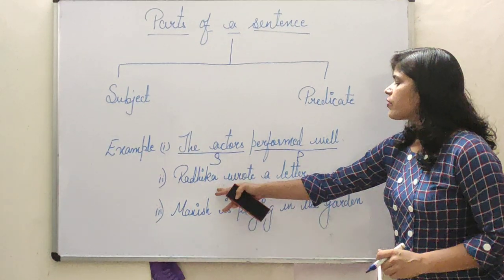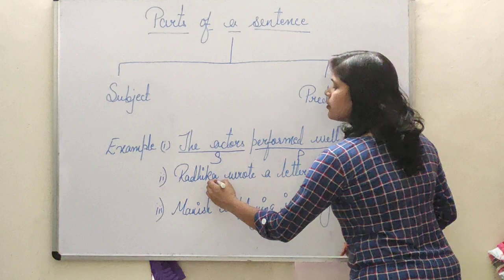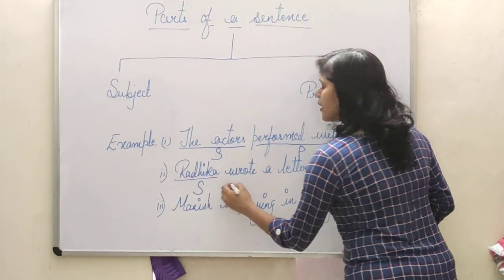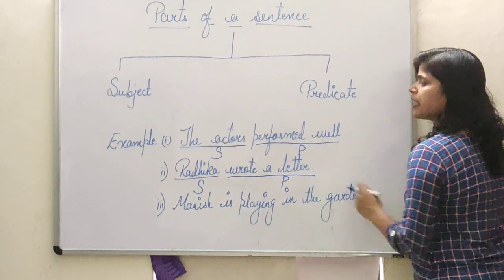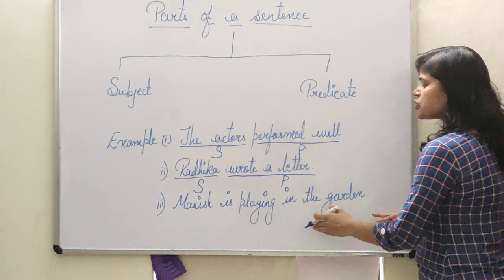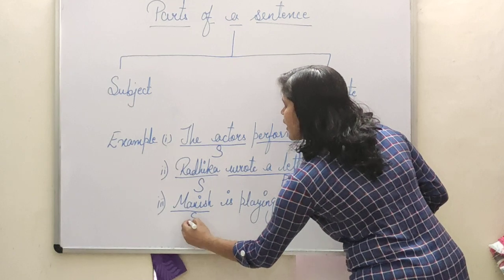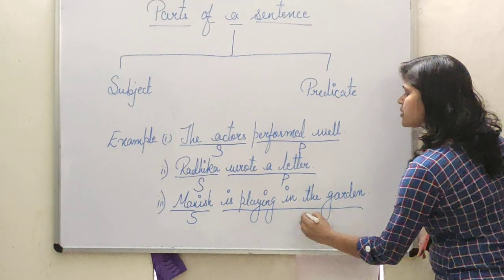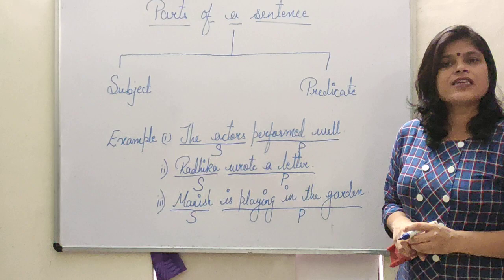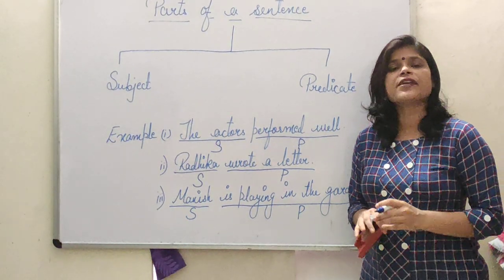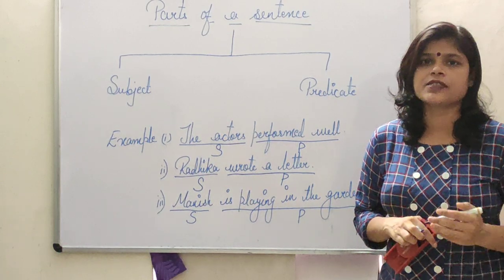Next: 'Radhika wrote a letter.' Here 'Radhika' is the subject and 'wrote a letter' is the predicate. Third: 'Manish is playing in the garden.' Here 'Manish' is the subject and the rest is predicate. Remember that the verb is an essential part of a sentence, and predicate starts from the verb.